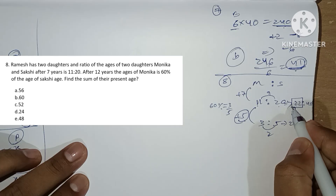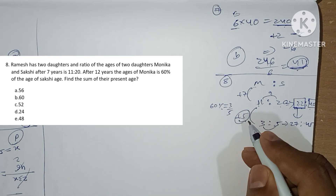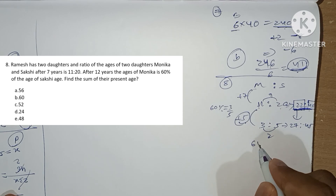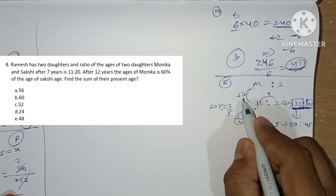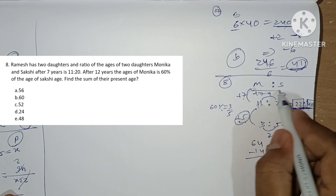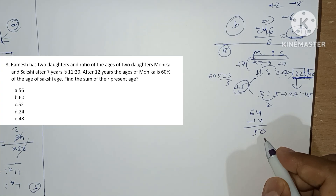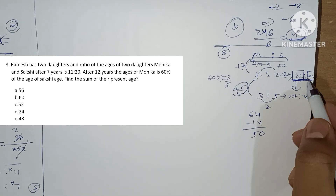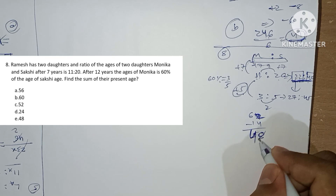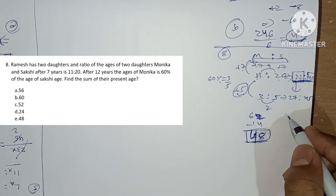With 1 part equal to 1 year: after 7 years, Monica is 22 and Satshi is 40. The total after 7 years is 62. Subtracting 14 (7 years for each) gives the present sum as 62 minus 14 equals 48. The sum of their present ages is 48. Option E is our answer.